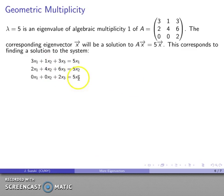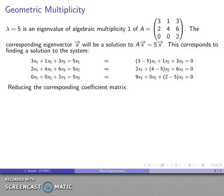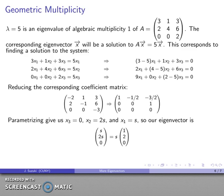First, second, and third components are 5 times whatever they were. And I'll rewrite the system as a homogeneous system of equations, I'll reduce the corresponding coefficient matrix, and after all the dust settles, I end up with this, and I get my parameterization.